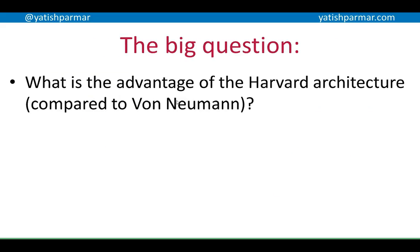So basically, you should be able to discuss what the advantage of the Harvard architecture is compared to von Neumann — bringing up that diagram and discussing the fact that you have two separate physical memory locations, which negates the bottleneck experienced in von Neumann architecture. Thank you very much, Mr. Palmer saying goodbye.